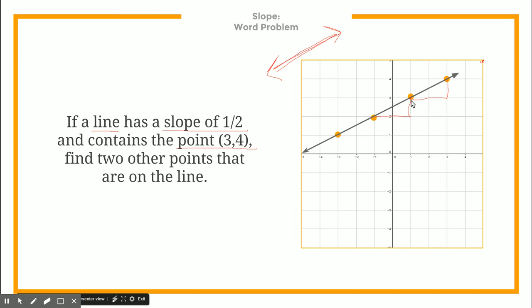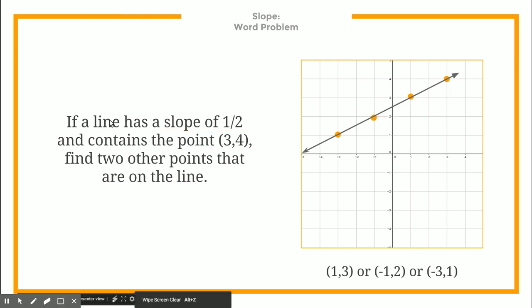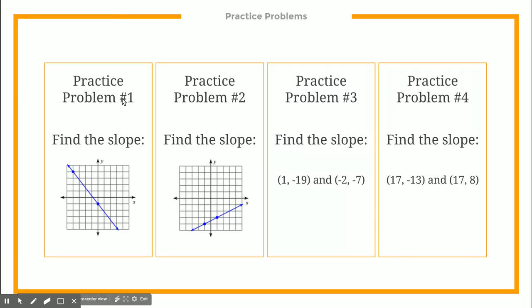Looking at these points, one is at (1, 3), another at (negative 1, 2), and one at (negative 3, 1). That's all you have to do on that type of problem. You have four practice problems to try — put them on your foldable, and if you have any questions we'll review this in class tomorrow. Bye!